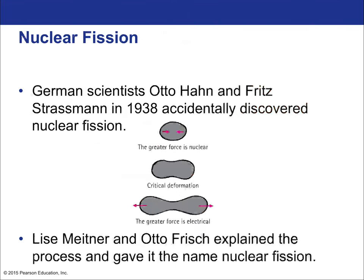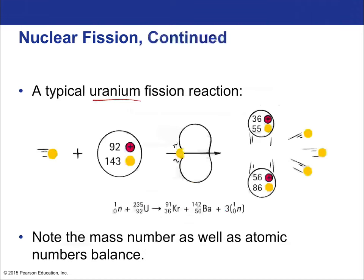German scientists Otto Hahn and Fritz Strassmann in 1938 accidentally discovered nuclear fission. They realized they could split apart the nucleus of an atom by deforming it to a critical point where the electrostatic repulsive force between protons overcame the strong nuclear force. Lise Meitner and Otto Frisch explained the process and named it fission. Uranium is well known for fission because it has one of the largest naturally occurring nuclei, with the greatest number of nucleons — protons and neutrons.